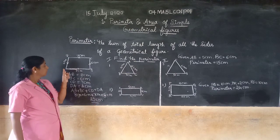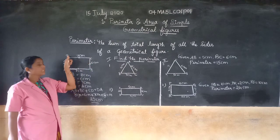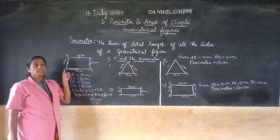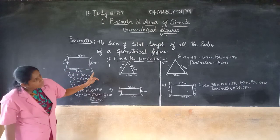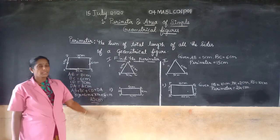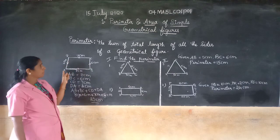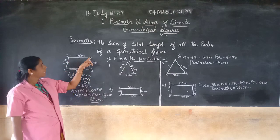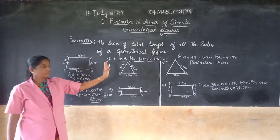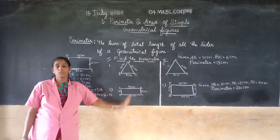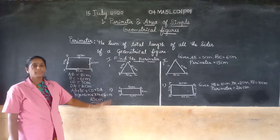Perimeter is the total measurement of the boundary. The boundary of a figure means the sum of the total length of all the sides of a geometrical figure. That is how to find out the perimeter of a given shape.